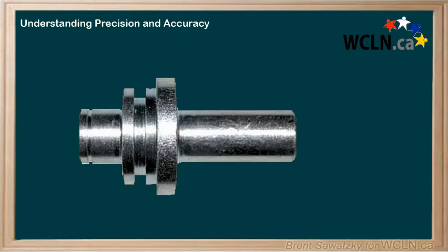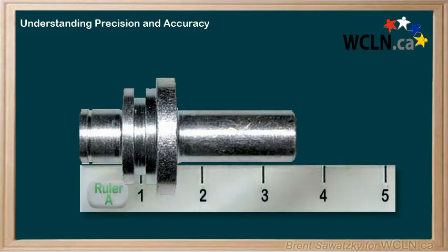Let's make a measurement. We want to measure this part in centimeters, so let's take out a ruler. Our ruler, called ruler A, is already in centimeters. The precision for this ruler is one centimeter — that is, the ruler is marked in one centimeter increments.